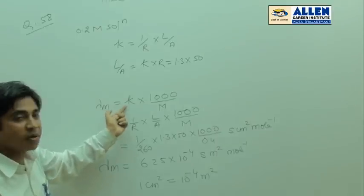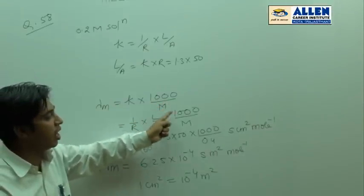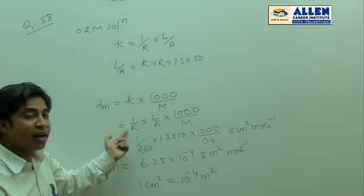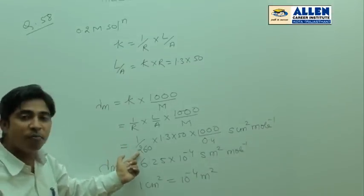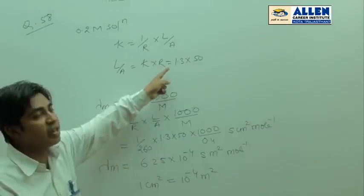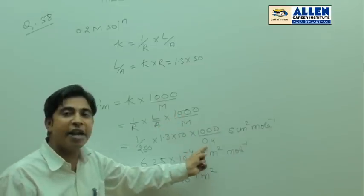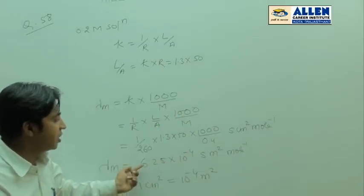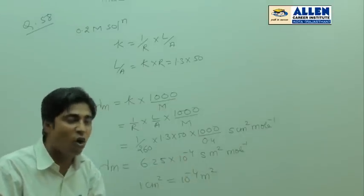Molar conductivity equals specific conductance times 1 by R times L by A times 1000 upon M. R given for 0.4 M solution is 260 ohm, cell constant 1.3 times 50 times 1000 upon molarity 0.4. So the value is 6.25 times 10 to power minus 4.